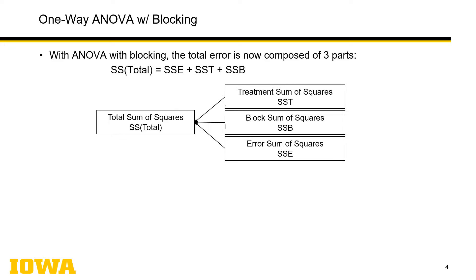With ANOVA with blocking, the total error is composed of three parts, not just two. Previously, with a one-factor experiment, we had the treatment sums of squares and the error sums of squares. But now we'd like to isolate the variance of the block sum of squares. Because if the block isn't accounted for, the error consists of both, and that much larger variance gets used in the denominator of the treatment sums of squares.